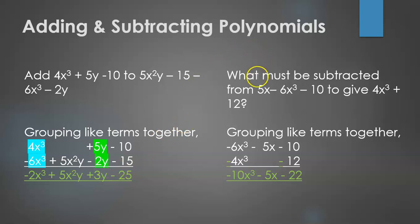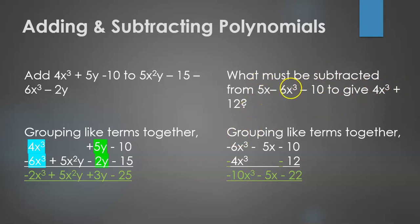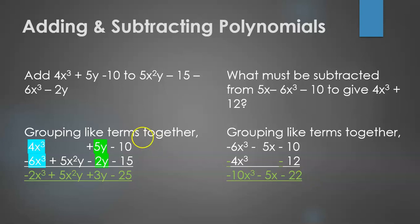Here's a variation: what must be subtracted from 5x minus 6x cubed minus 10 to give 4x cubed plus 12? This is equivalent to a minus b equals c, so b equals a minus c. We subtract 4x cubed plus 12 from 5x minus 6x cubed minus 10, changing signs to minus 4x cubed minus 12. That gives the result: minus 10x cubed minus 5x minus 22.